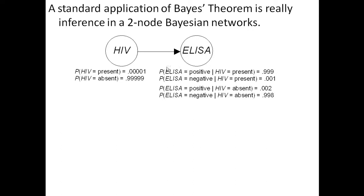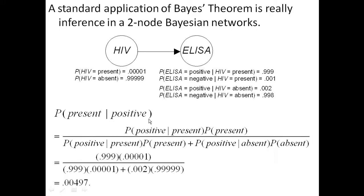If we know the value of ELISA, we can compute the probability HIV equals present given that value of ELISA. That is Bayes' theorem, but that is also inference in a two-node Bayesian network.